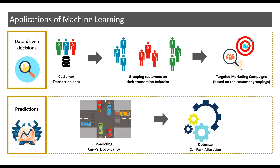Next, prediction. When it comes to prediction, there are various types of prediction that we might have generally heard of, such as sales prediction, cost prediction, or even weather for that matter of fact. One interesting project that I worked on was to predict the car park occupancy for a commercial complex. They wanted to know, given a particular day and time of day, how much was the expected car park occupancy so that they could optimize the car park allocation accordingly.